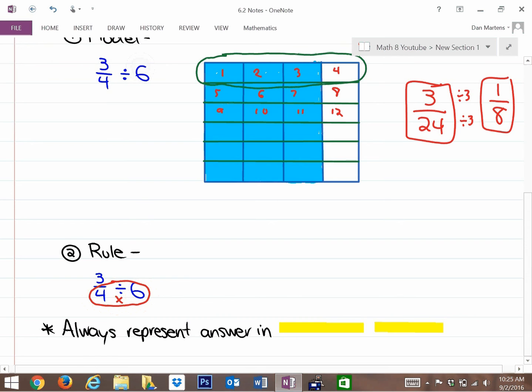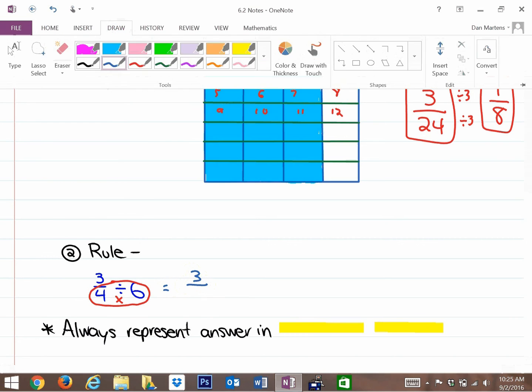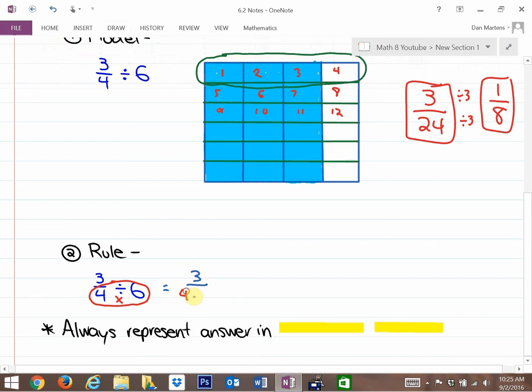3/4 divided by 6—we're going to do the exact same problem but use a rule. What we noticed is we multiply the denominator by the whole number and leave the numerator alone. We're dividing 3/4 into six parts, so you still get the three parts.